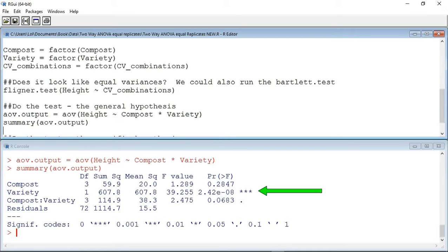However, for variety, the p-value is extremely small, at 2.42 times 10 to the minus 8. This indicates there is a significant difference between the heights of the two varieties, and that we can reject the null hypothesis that there is no difference in height due to variety.